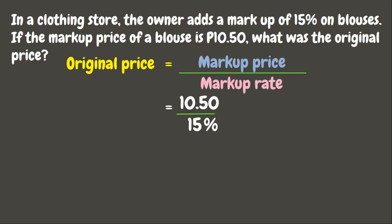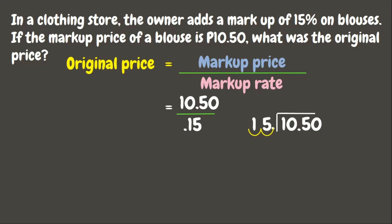Before we can divide, let us change the percent into decimal. Now let us divide 10.50 by 0.15. Again, before we divide, we need to make sure the divisor is a whole number, so let us move the decimal point. Since we moved two times in the divisor, let us move two times in the dividend as well. Now let us divide 1,050 by 15.